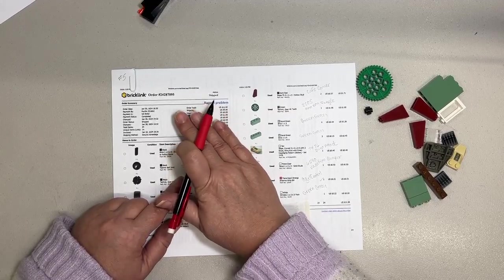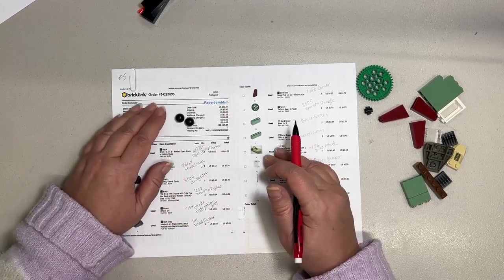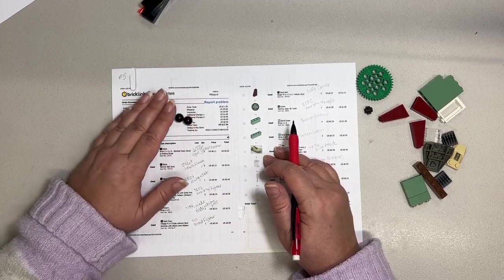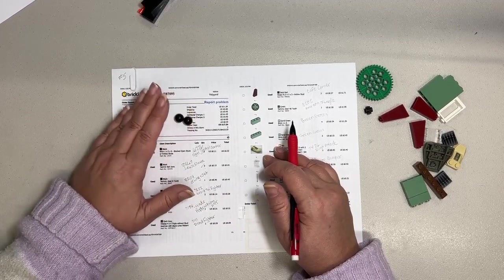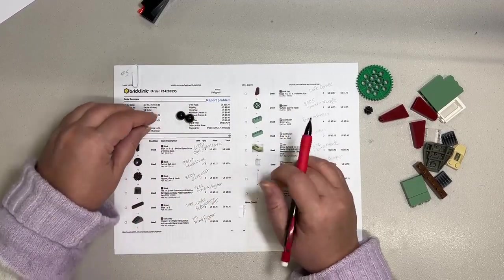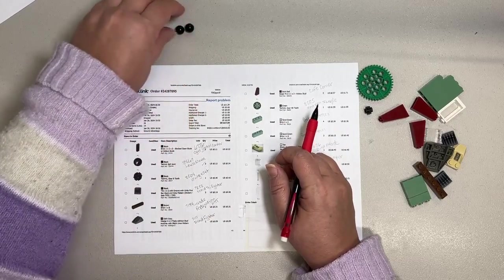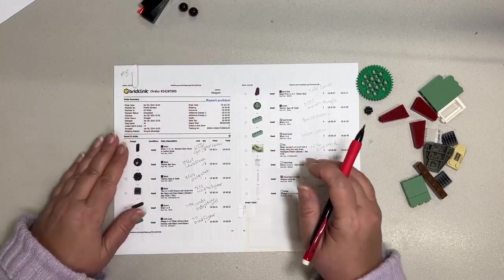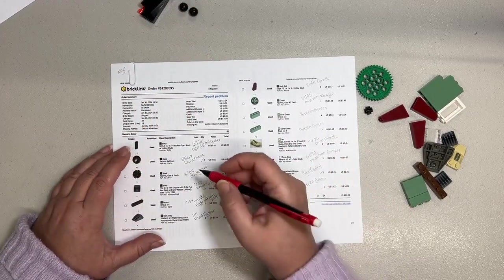These two parts are actually for an alternate build on that Bionicle, so I'm going to add these to the eBay and take off the description that those were missing. That'll change up that eBay posting a little bit.